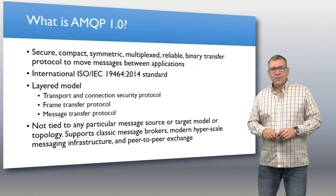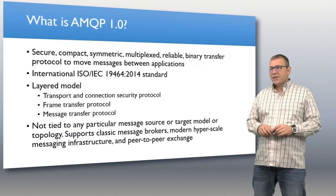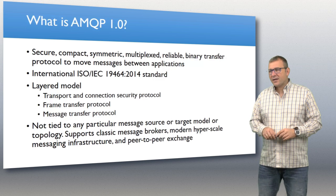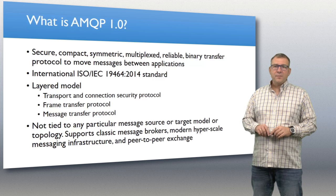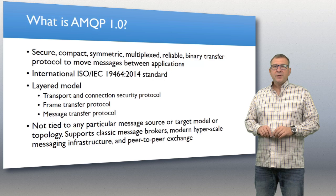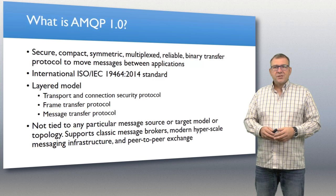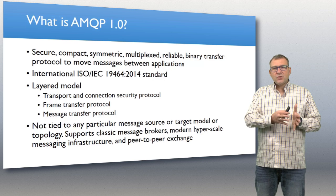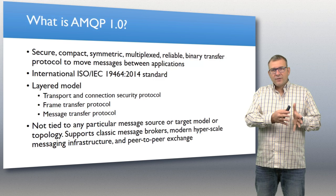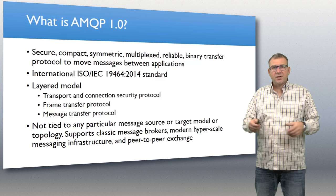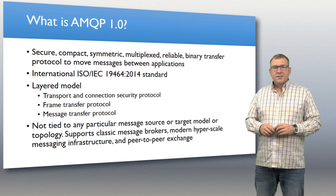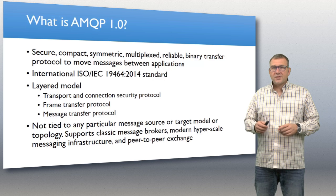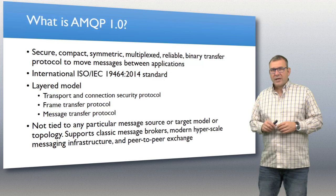The standard is AMQP 1.0. It is now ISO IEC standardized — 19464 — and with that, being an ISO standard, it's also being adopted into vertical industry standards to provide messaging capabilities in the context of those industries. Being an IEC or ISO standard certainly helps with that.